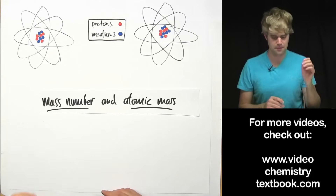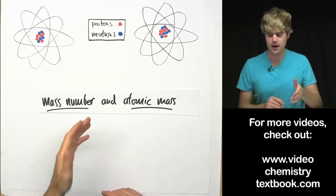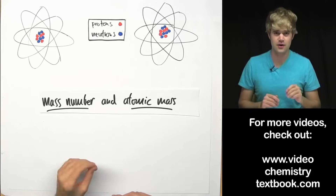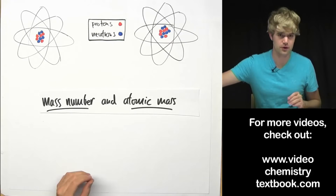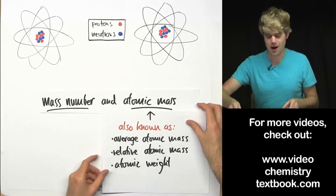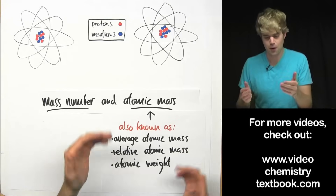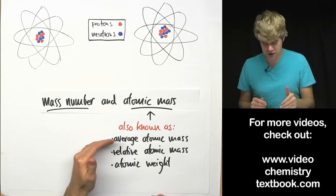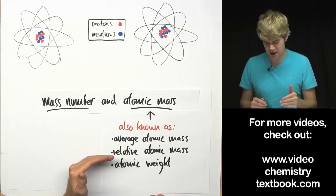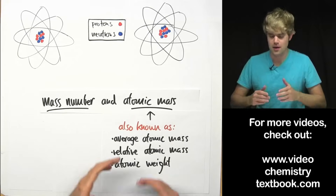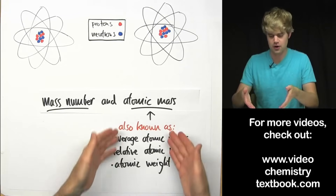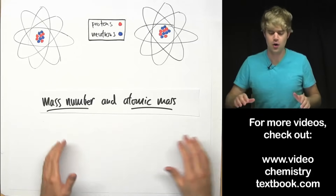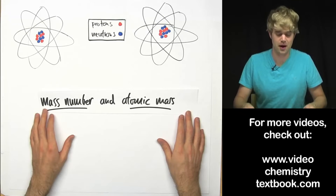Let's talk about the difference between mass number and atomic mass. These things sound very similar but they're actually very different. Atomic mass can go by other names — sometimes it's called average atomic mass, relative atomic mass, or even atomic weight. Maybe your teacher calls it one of these. For our purposes in this video we're just going to call it atomic mass.